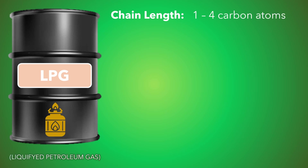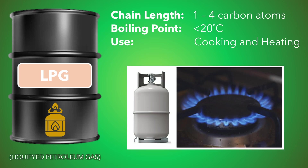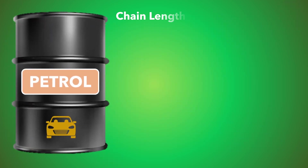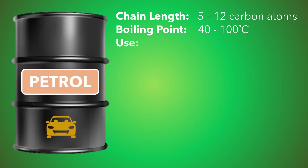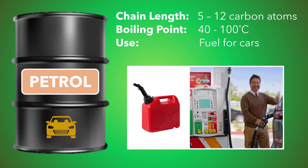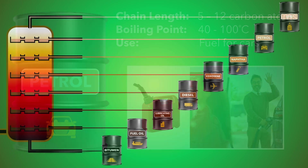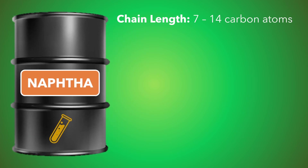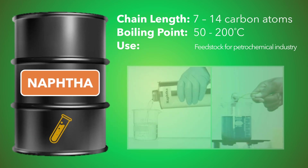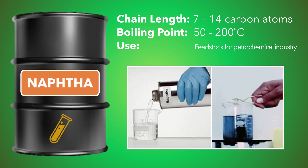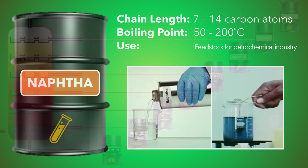Liquified petroleum gas is the only fraction collected as a gas from the column. It is bottled for use in cooking and heating. Petrol or gasoline is used as fuel in cars. Naphtha is used as feedstock for the petrochemical industry — basically meaning it's used to make things, like chemicals or plastics.